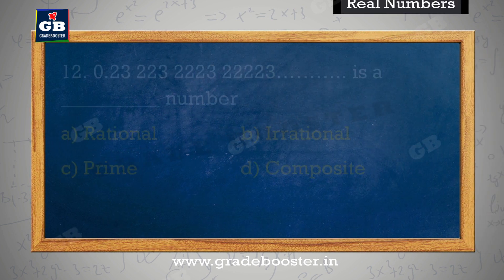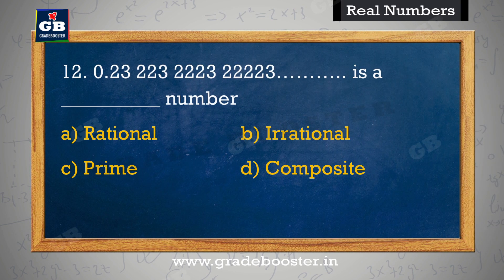0.23, 223, 2223, 22223, so on is a dash number. 0.23, 223, 2223, 22223 so on ek dash sankhya hai. A. Rational, B. Irrational, C. Prime, D. Composite.